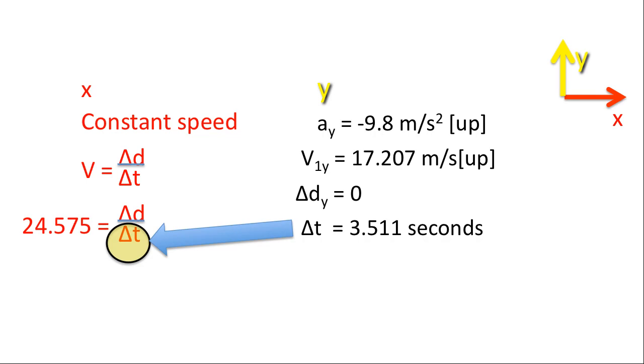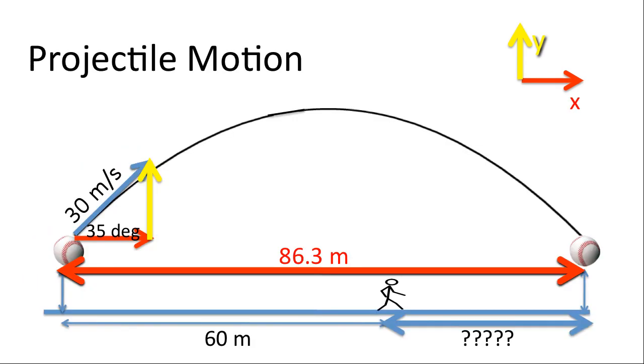And so now we're going to substitute that time back into the equation for the x direction and solve for distance. And so substituting and cross-multiplying, we end up with 86.3 meters. And so this ball will travel 86.3 meters from where it was originally hit. Taking the difference of 86.3 meters and 60 meters, the person will have to travel 26.3 meters to catch the ball.